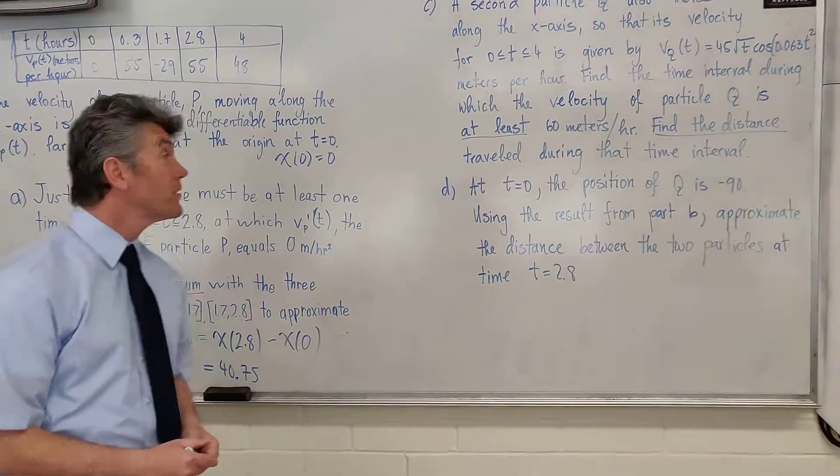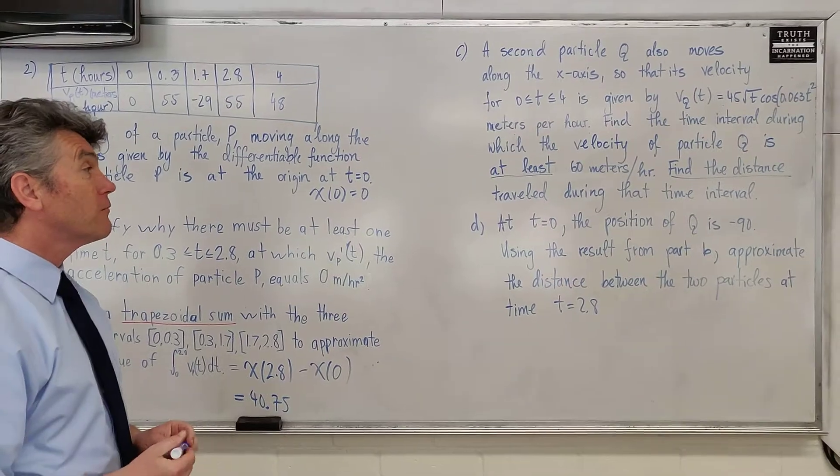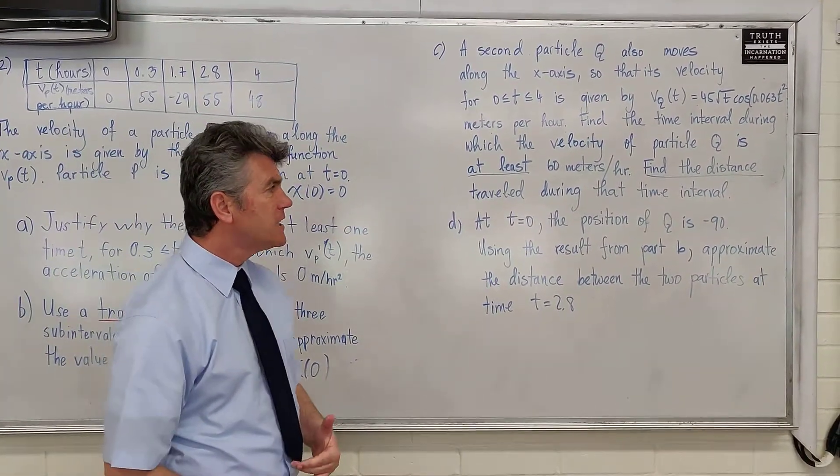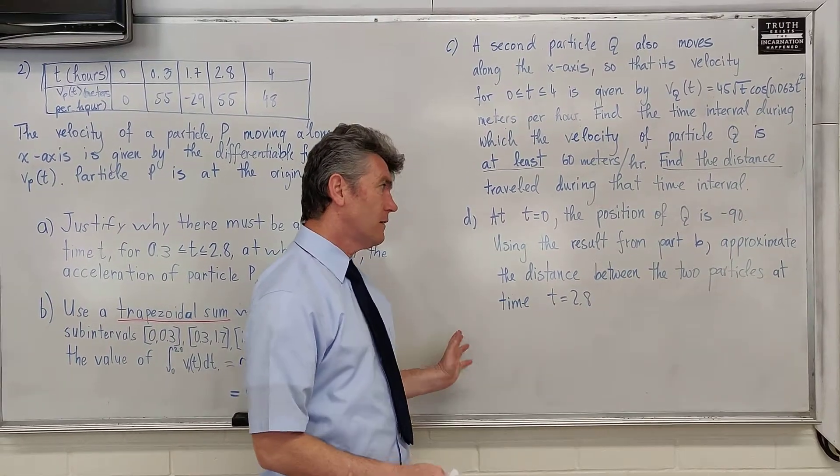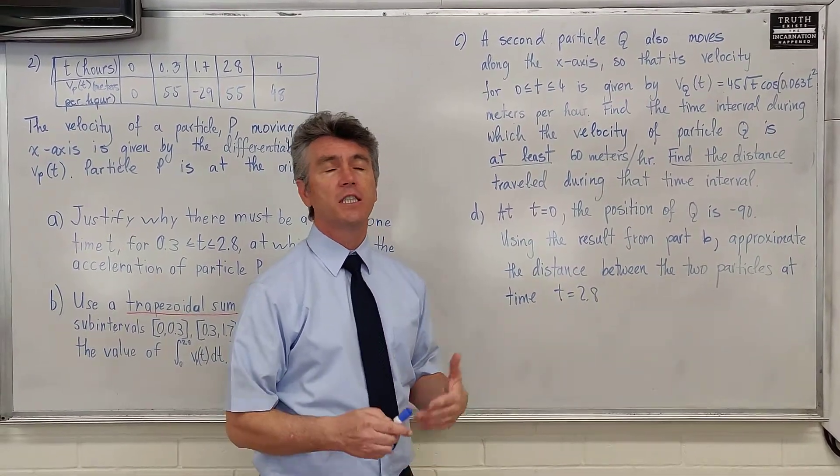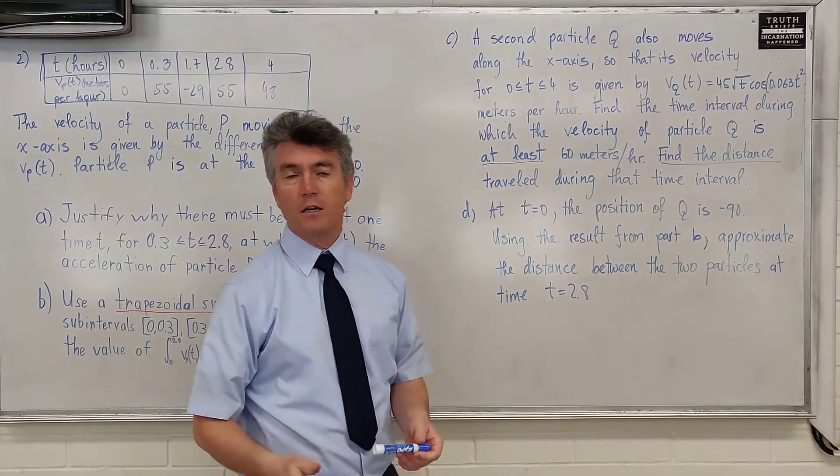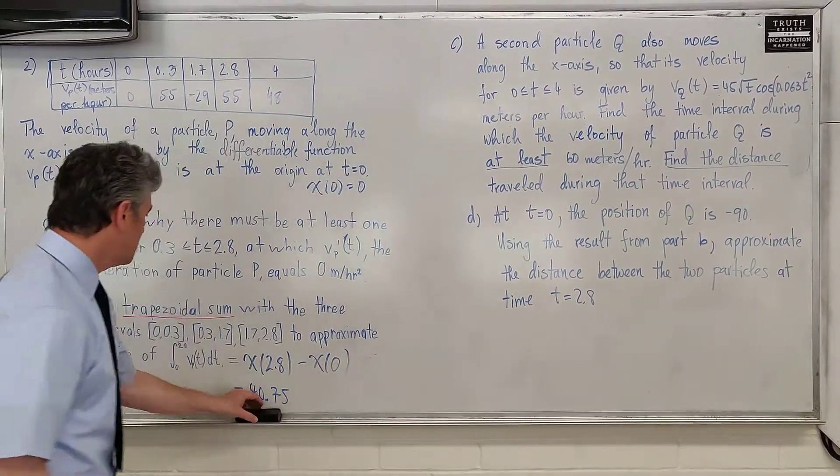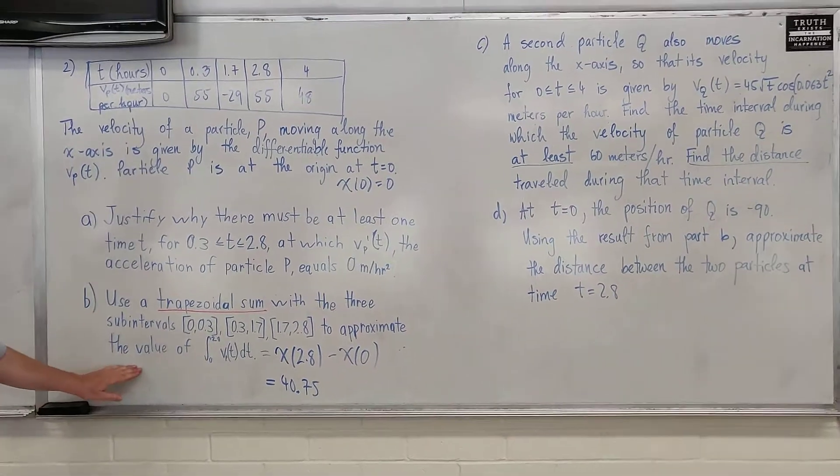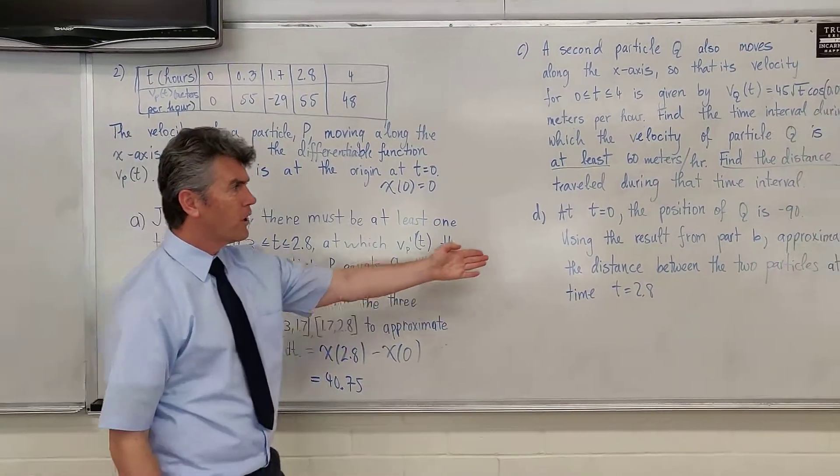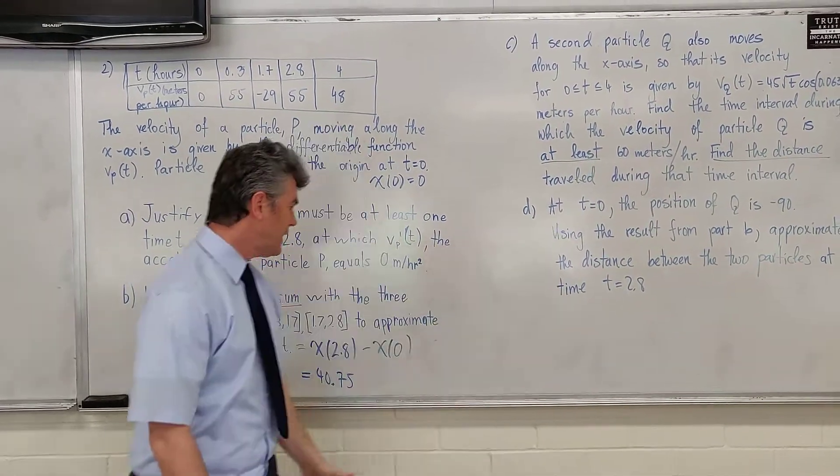Now we get to the last part of question number 2. We're asked to find the difference in the distance between the positions of the two particles. We already know the position of particle P from part B, and we're told to use the result from part B.